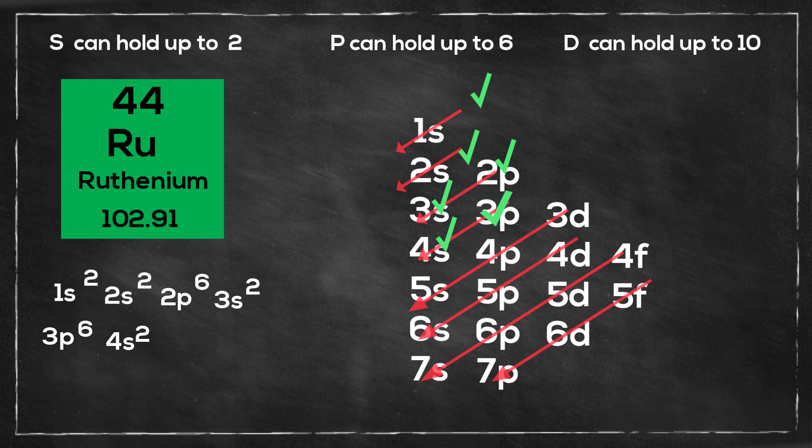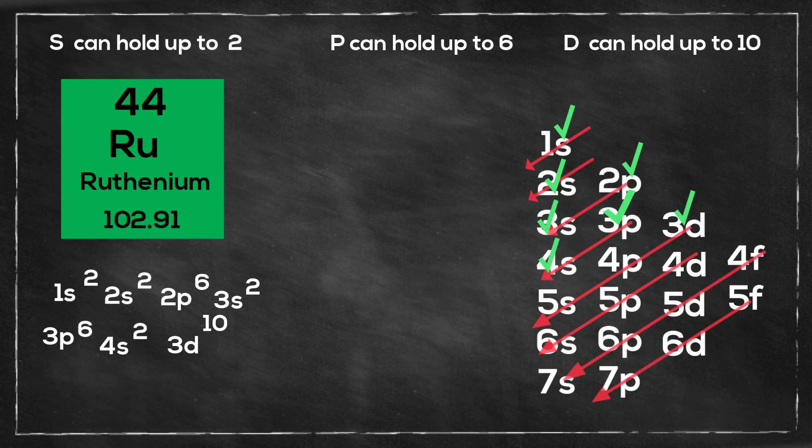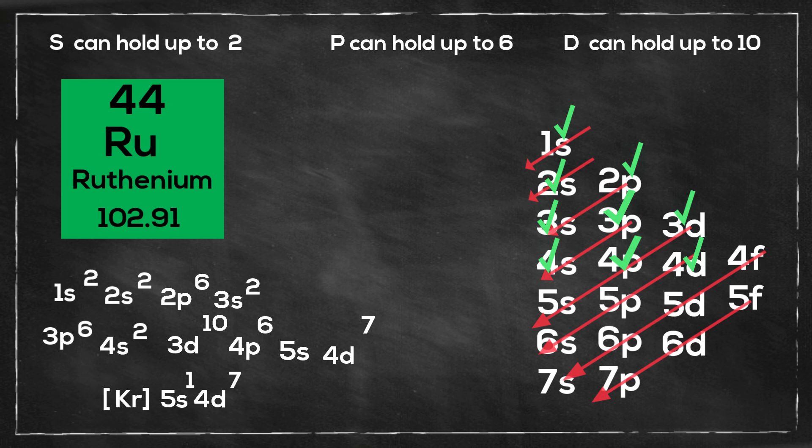Then 3d10, then 4p6. And normally you would go 5s2, 4d6, but ruthenium is more stable at 5s1, 4d7. So there is the electron configuration of ruthenium.